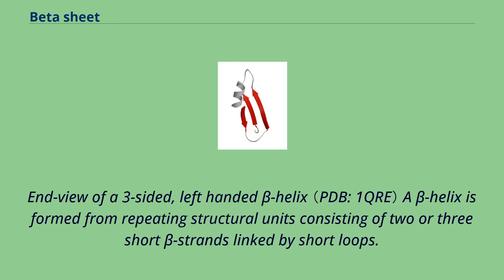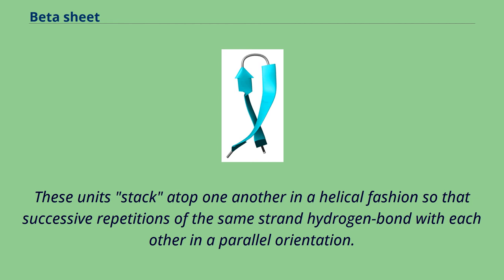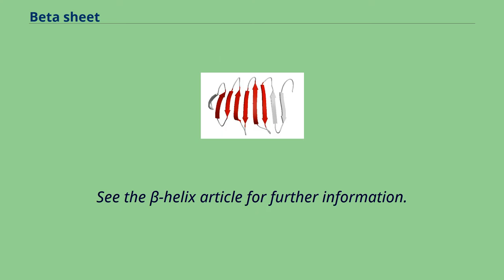End view of a three-sided left-handed beta helix. A beta helix is formed from repeating structural units consisting of two or three short beta strands linked by short loops. These units stack atop one another in a helical fashion so that successive repetitions of the same strand hydrogen bond with each other in a parallel orientation. See the beta helix article for further information.